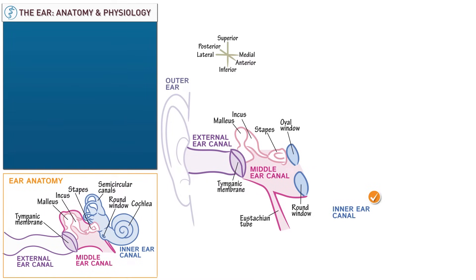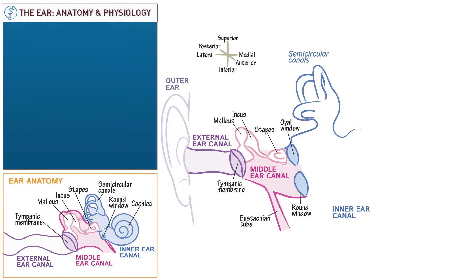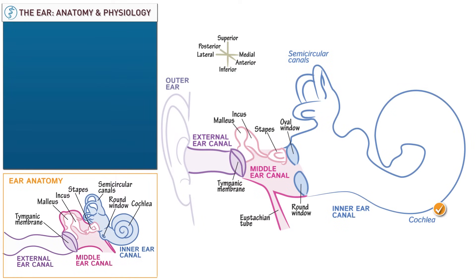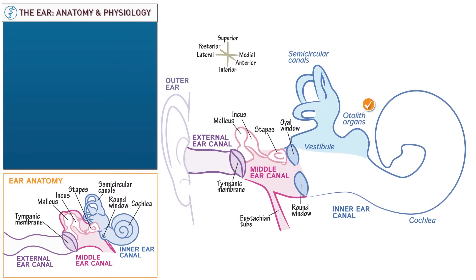Next, let's draw the inner ear canal, which lies within the petrous portion of the temporal bone. We draw it in three different parts. First, sketch the semicircular canals, which lie in superolateral position and serve vestibular function. Then draw the cochlea, which is shaped like a snail's shell, lies in anterior-inferior position, and serves auditory function. Lastly, label the vestibule, which lies in between the cochlea and semicircular canals. It transmits sound waves from the oval window to the cochlea and contains the otolith organs, which provide vestibular cues.